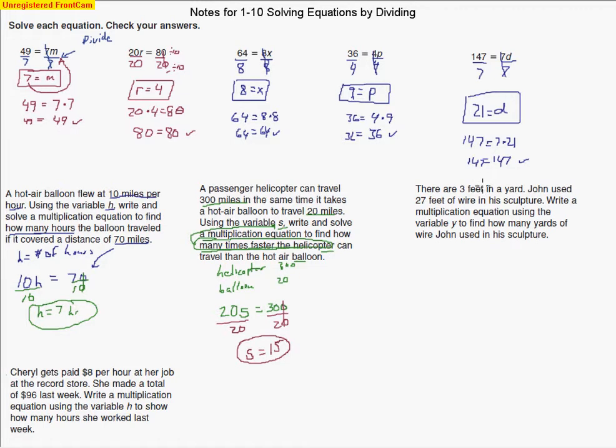There are 3 feet in a yard. That's important, so we'll underline that part. John used 27 feet of wire in his sculpture. Write a multiplication equation using the variable Y. We're supposed to use an equation with Y representing the number of yards of wire John used. Y equals how many yards he used.